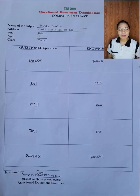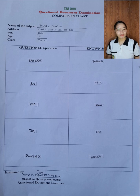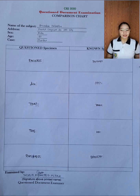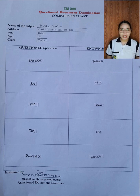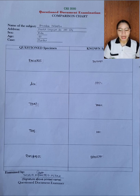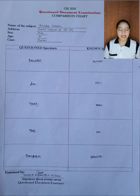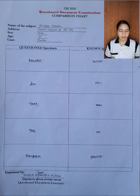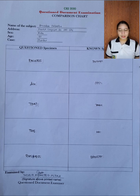Here is my final comparison chart, as seen in the picture. The name of the subject is Brandon P. Delante, address in RO City, sex male, age 22, case: murder. On screen you will see five questioned specimens and five known specimens. Let's start discussing these specimens.